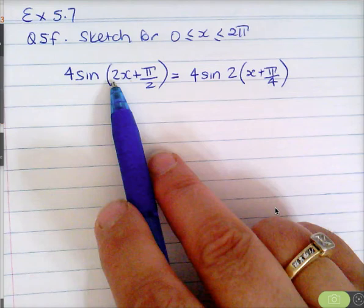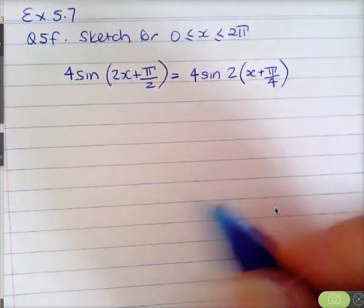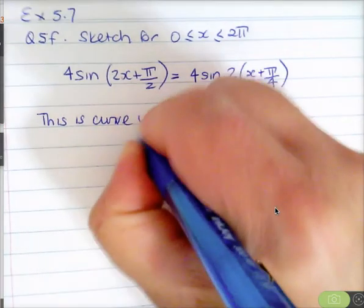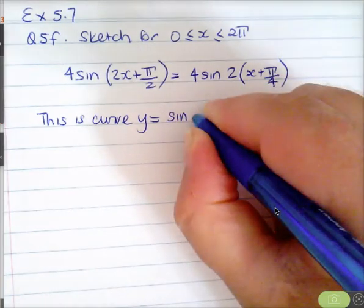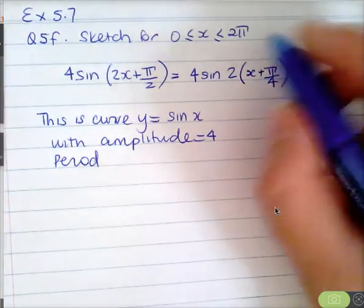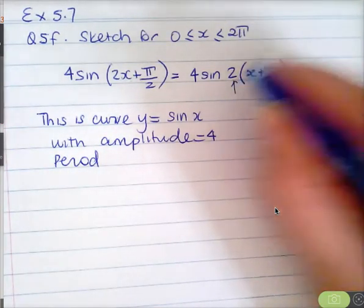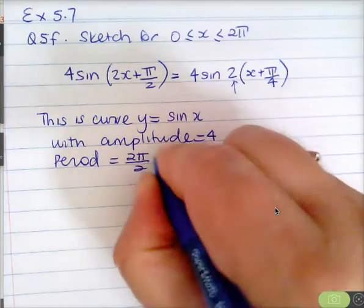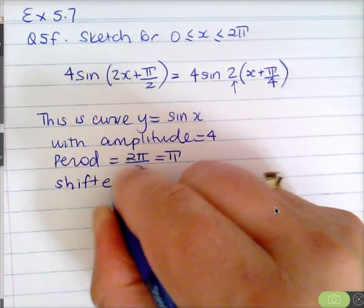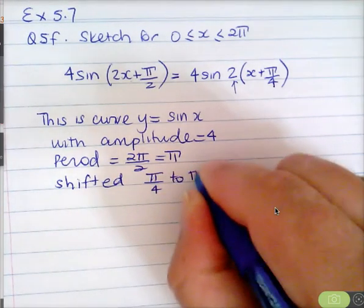Just checking: 2 times π on 4 makes it π on 2, so this is what we sketch. Basically this is the curve y equals sine x with amplitude equal to 4. The period is 2π divided by 2, which is π, and the shift is π on 4 to the left.